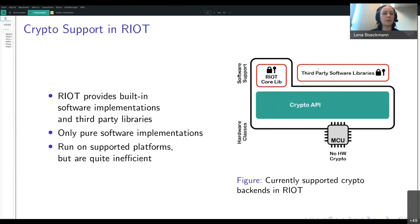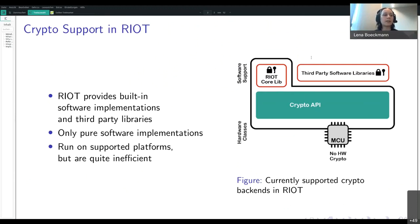On the first slides we can see the current crypto support in RIOT. So far RIOT provides built-in software implementations for some important hashes and ciphers, as well as access to various third-party libraries. All of those are pure software implementations which run on all our supported platforms. Unfortunately, software cryptography proves to be quite inefficient.